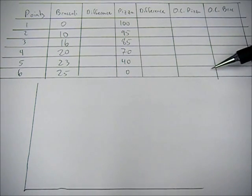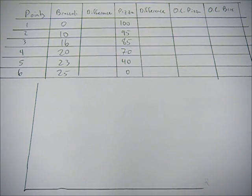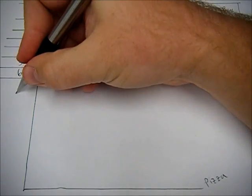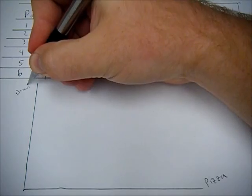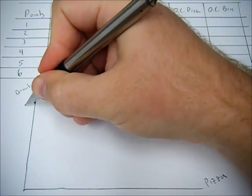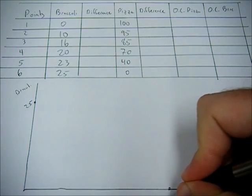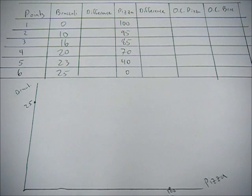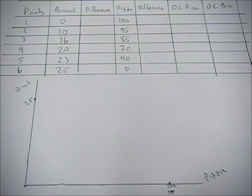But if we just add in these other boxes like this difference column, where we calculate the difference between broccoli and the difference between pizza, not only can we calculate the opportunity cost, but this will also give us the slope between the lines. So again here on our x-axis we're gonna have pizza.